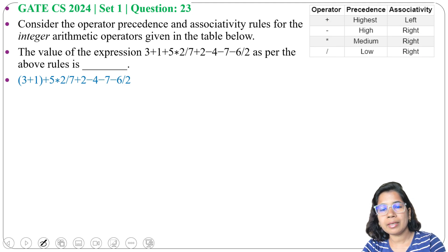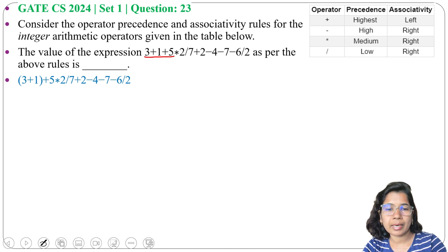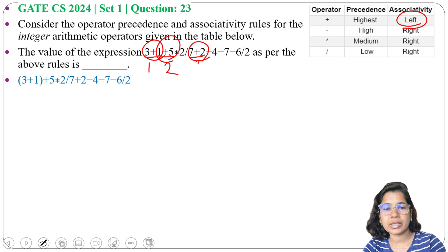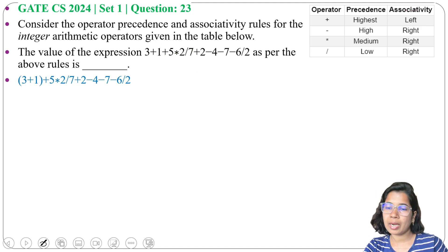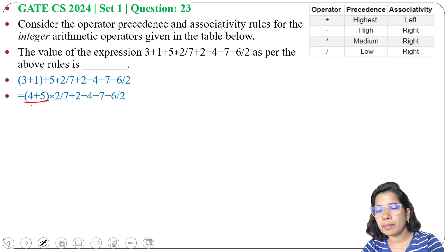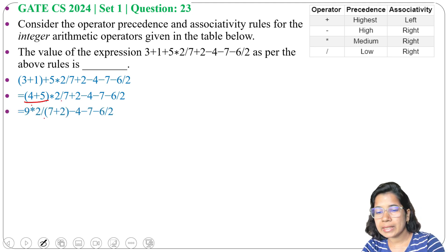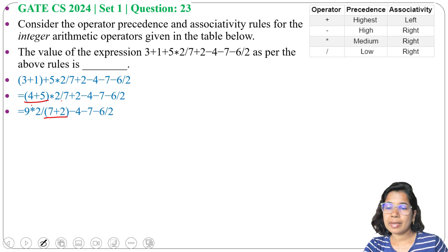I am adding brackets around plus. There are three plus operators and it is left associative. So we will evaluate the leftmost plus first, then the next, then the last. Three plus one is four. Next we will evaluate four plus five, which is nine. Next we will evaluate seven plus two, which is nine.